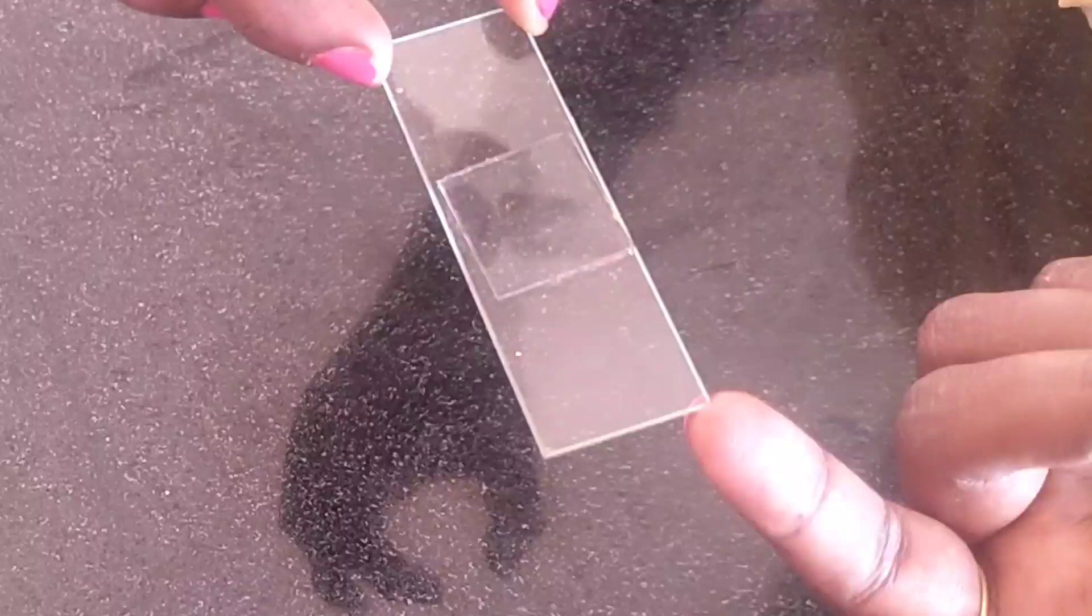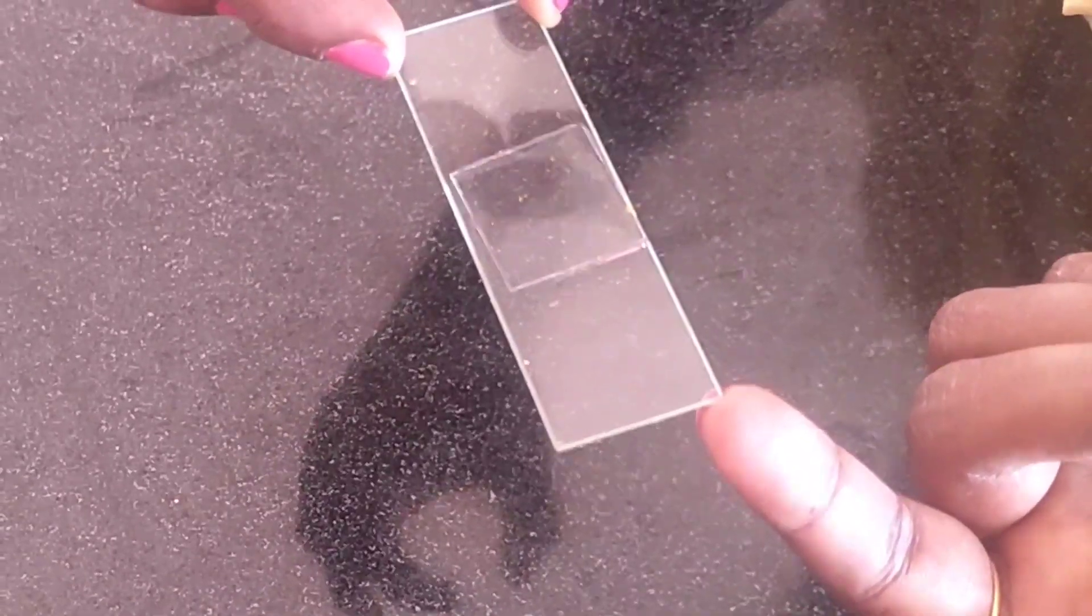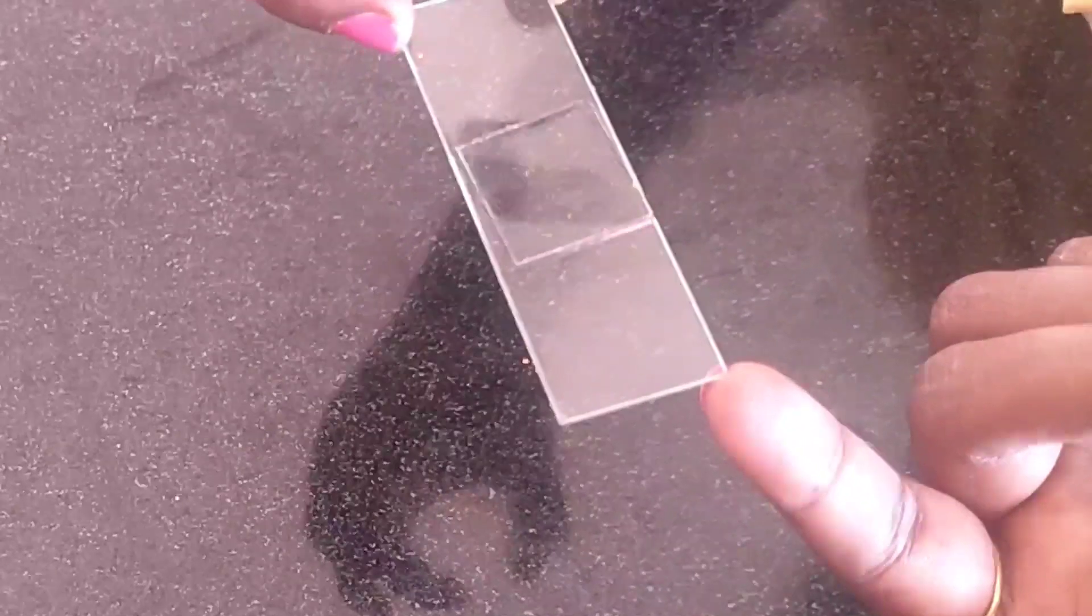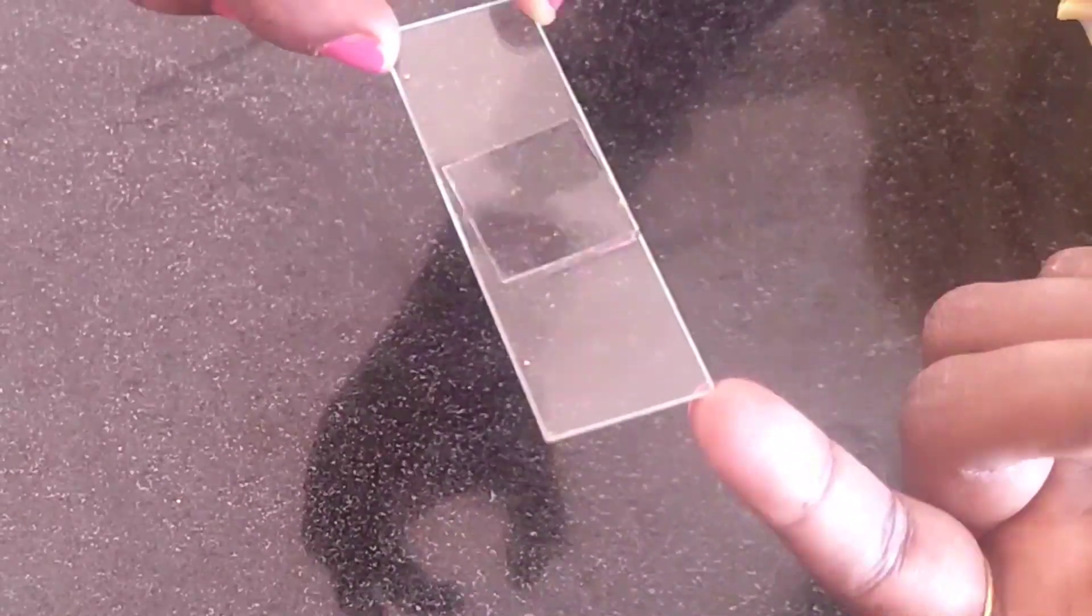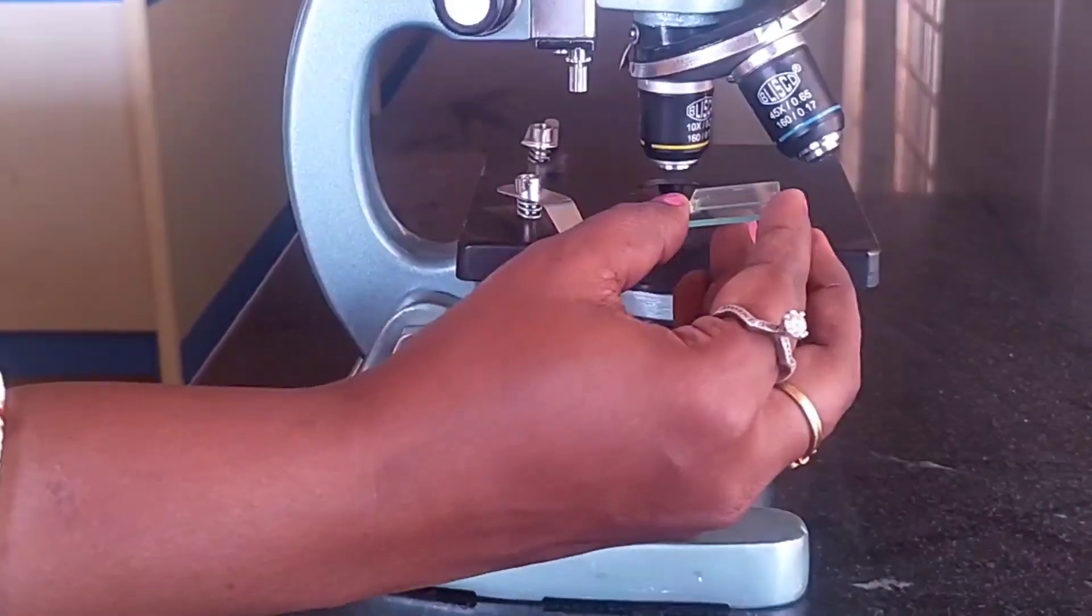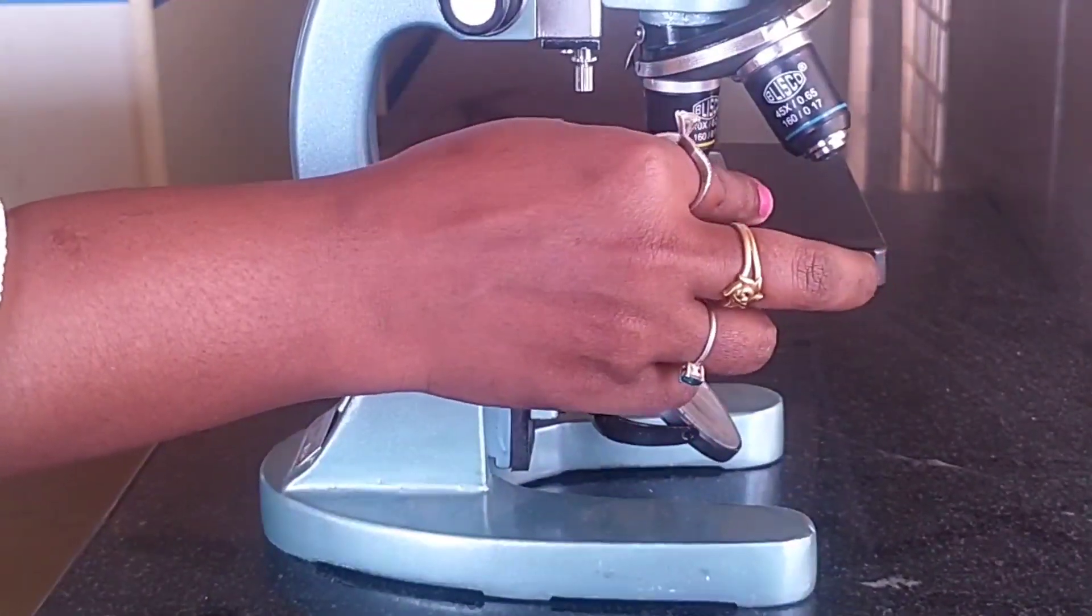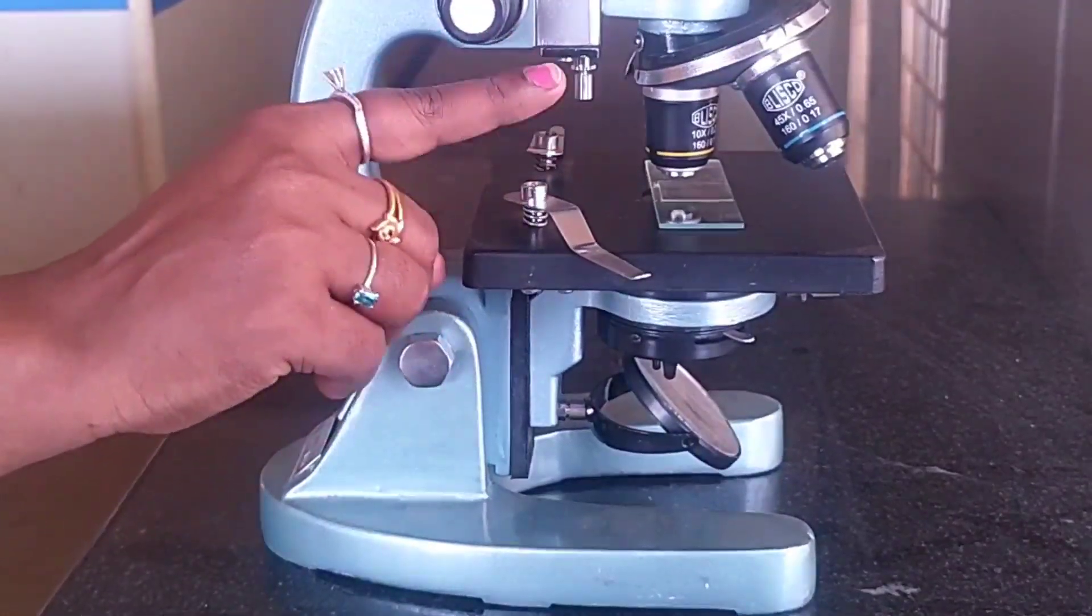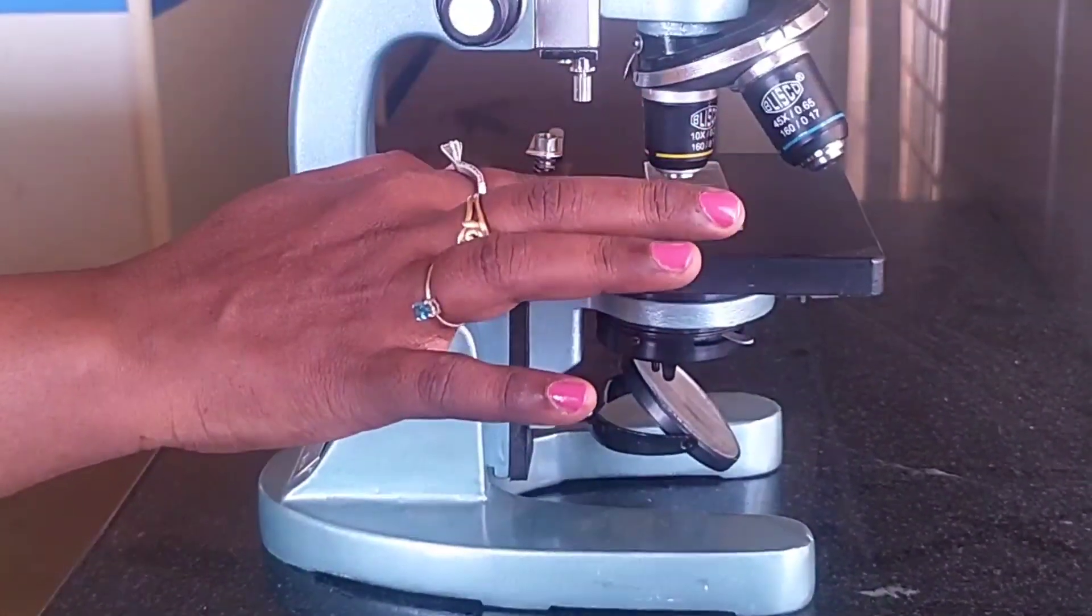Now we have to view this slide under the microscope and you have to count how many pollen grains are present initially. We need to keep this slide under the microscope and study the initial pollen grains, or number of pollen grains that is present on this slide.